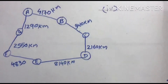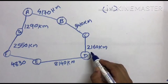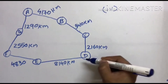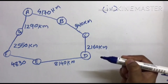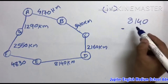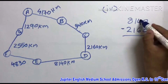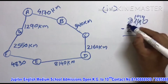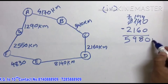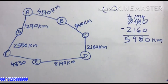Fourth question: Find the difference of distance from C to D and D to E. Difference यानि minus करना है। C से D — 2160 km, D से E — 8140 km. Minus करने के लिए बड़ा number पहले लिखना है: 8140 − 2160 = 5980 km. Understood? Fifth question...